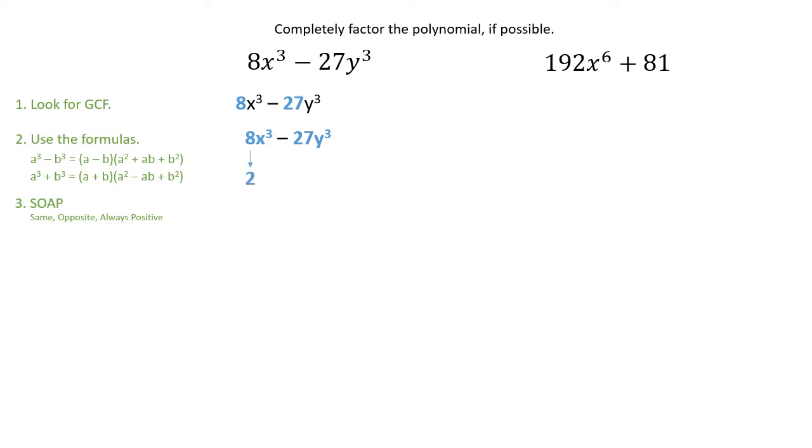The cube root of 8 is 2. The cube root of x to the third is x. 3 divided by 3 is 1. You would divide in order to find the exponent of a cube root. The cube root of 27 is 3, and the cube root of y to the third is y. Again, the exponent is 3 divided by 3 for cube root, and that would be y to the first power, or just y.